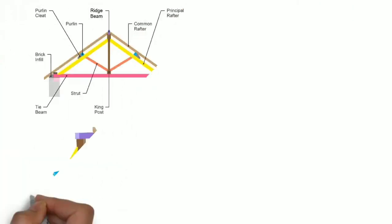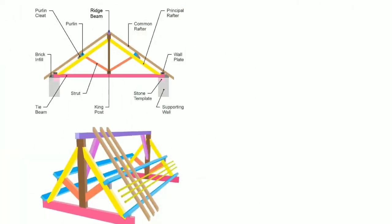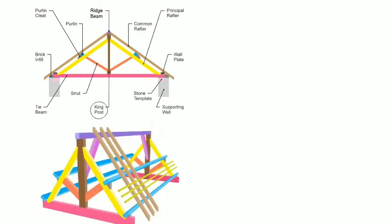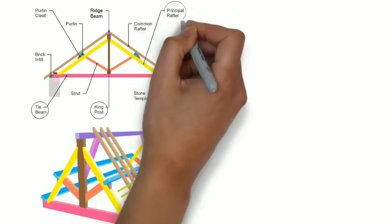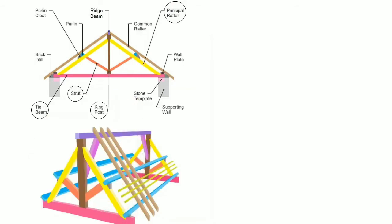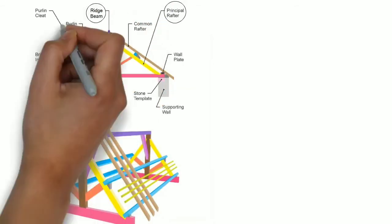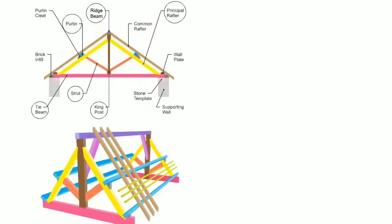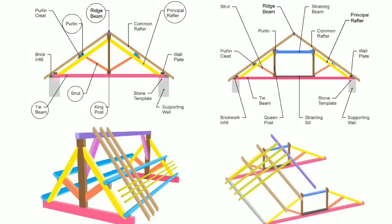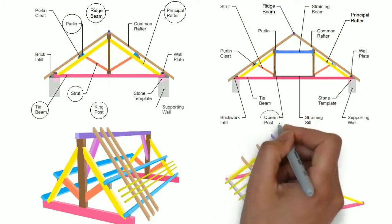Components. You can see in this picture, the king post truss consists of king post, tie beam, two principal rafters, struts, ridge beam, and pareens. Whereas the queen post truss consists of two queen posts, two principal rafters, ridge beam, struts, tie beam, straining beam, straining sill, and pareens.